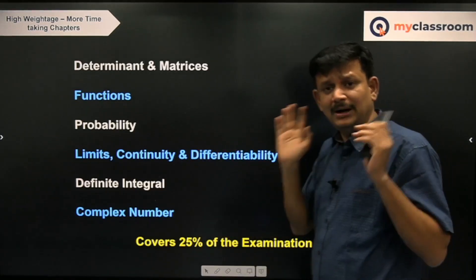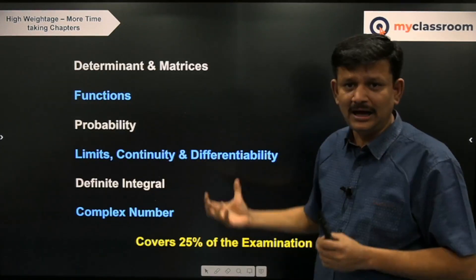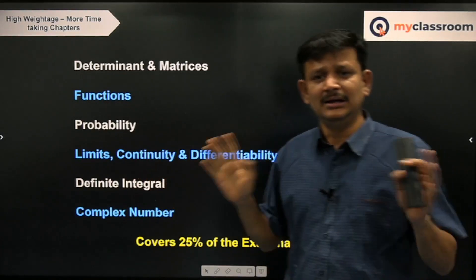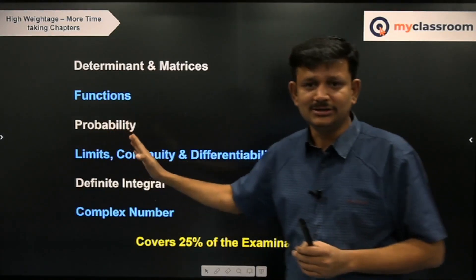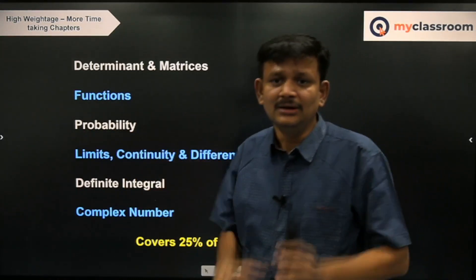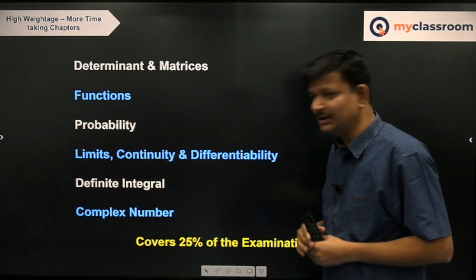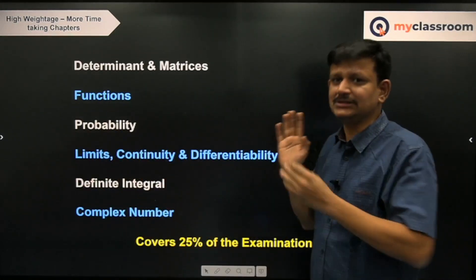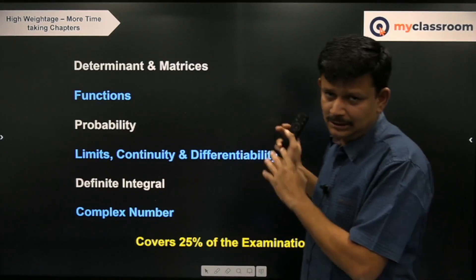Limits, continuity, and differentiability is again a little time-consuming, but a decent set of questions will come. Especially on continuity — if you are short on time, standard simple continuity questions can be done in less than 30 to 40 seconds. Do not ignore continuity and basic limits. For higher-level limit questions you can ignore them if needed — basic limits with continuity will give you 90 percent assurance. The remaining 10 percent can be covered by higher-level limit questions. Differentiability is also a simple concept — do not confuse yourself too much with it.